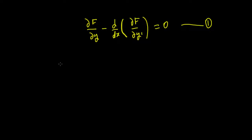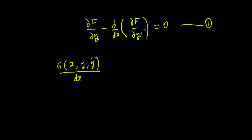So if we were to write out a total derivative, let's say we had a function g of x, y, and y'. Then, using the chain rule, we could differentiate this with respect to x — which is the same as what we're doing up here. We're differentiating some function with respect to x. We'll just use g in this example, and we'll multiply this out to see what it ends up as.